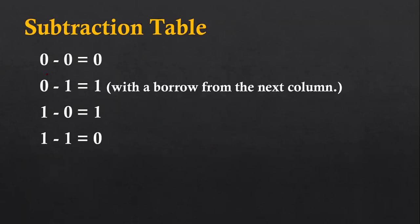Here you can see I have mentioned four steps. In the first step, zero subtracted with zero gives zero. If we are subtracting one from zero, we have to borrow the base from the next higher column, and the result will be one. Then one minus zero gives one, and one minus one gives zero. These three steps are pretty simple. The second step is the difficult one, which you will understand while I explain the examples.